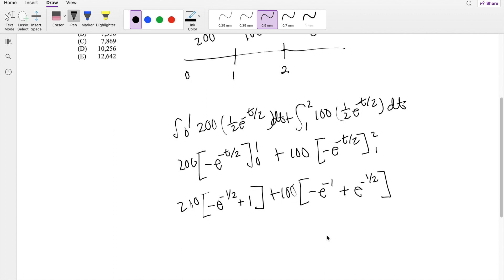Alrighty, cool stuff. Now we just have to plug and chug. I'm plugging this whole thing into the calculator. 200 times 1 minus e to the negative 1 half, plus 100 times e to the negative 1 half minus e to the negative 1, and this is equal to 102.5588.